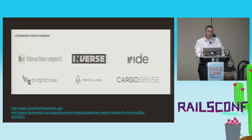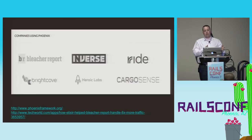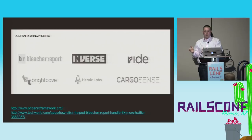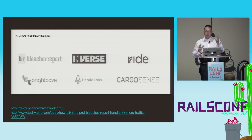There are a number of companies running Phoenix in production. Bleacher Report is the example I've heard most. According to their reports, they were able to handle eight times more traffic while reducing the number of servers when they migrated from a Rails stack to a Phoenix stack — from 150 servers to five. And if I'm honest, that sounds a bit too good to be true, and there's probably a little fudge room in there.